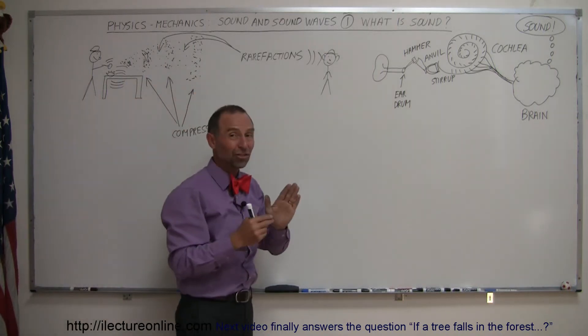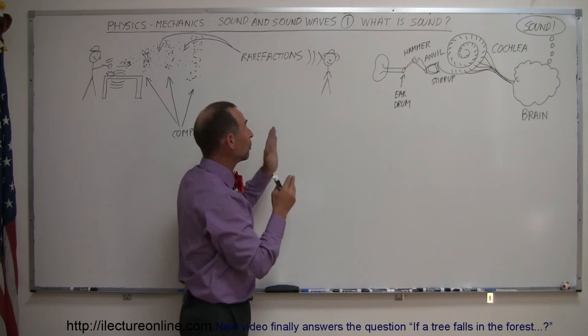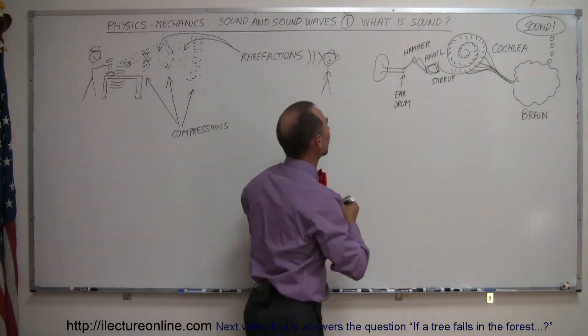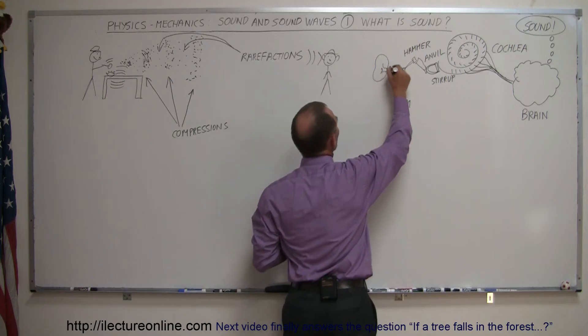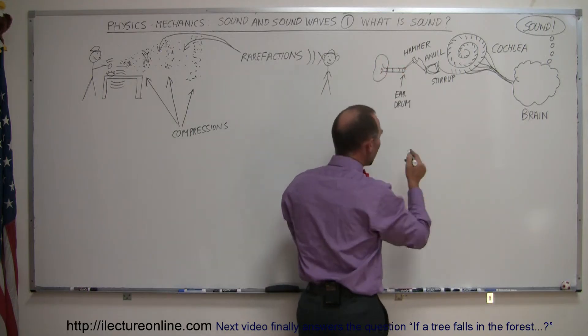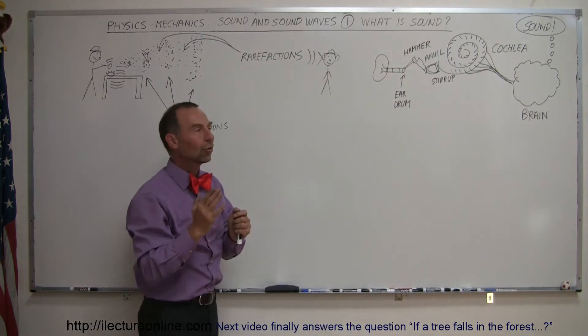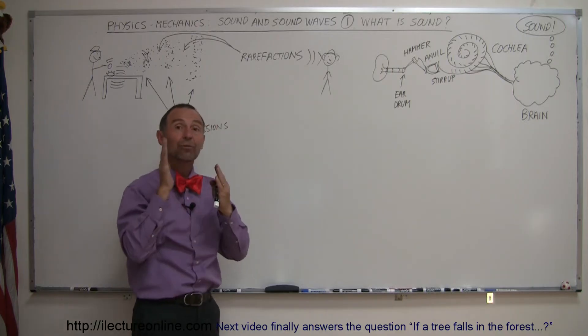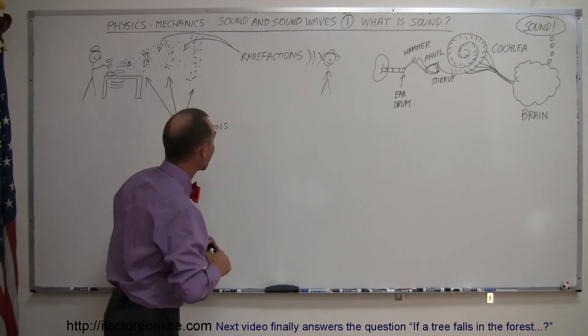So eventually, these compressions and rarefactions reach somebody that has an ear and the ear has an air canal. So these compressions go inside the air canal and bump against the eardrum. And so the eardrum begins to vibrate at the very same frequency as the frequency of these air compressions.